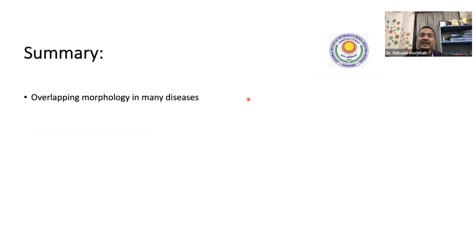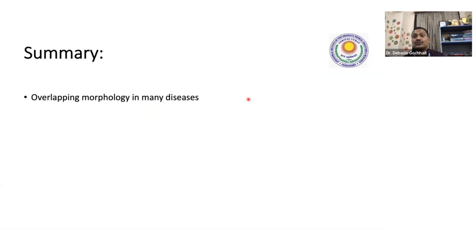To summarize: there can be overlapping morphology in many diseases — kidney biopsy can look the same, and for skin vesiculobullous disorders you can't distinguish bullous pemphigoid from EBA or dermatitis herpetiformis on morphology alone. Morphology gives some clue but for confirmation you need immunofluorescence, just as we use immunohistochemistry for tumors. Direct immunofluorescence is mandatory for all kidney biopsy interpretation. DIF is very useful in vesiculobullous disorders too, and in difficult cases it helps decide the correct diagnosis.